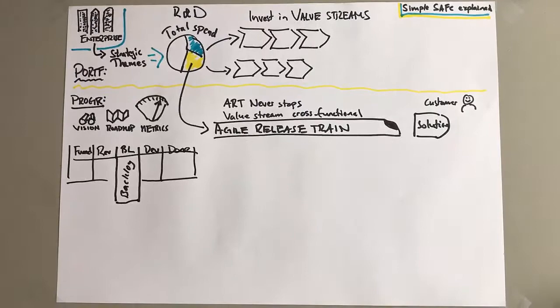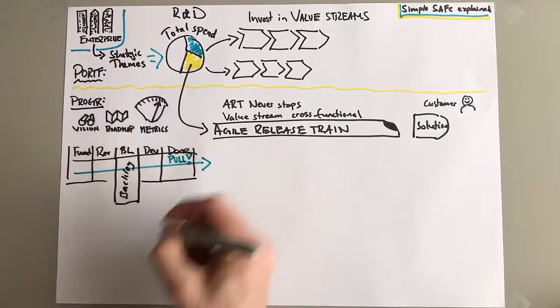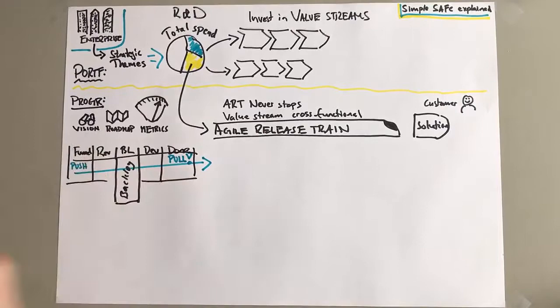So I've done a super simple Kanban here with a funnel, review stage, backlog, development, and done. You will probably have more steps than this. You could have a review and analysis, you could build a business case. You could also do that on a portfolio level. After you develop something, you could have a validate stage. But the important thing is to focus on the flow and to have a pull system.